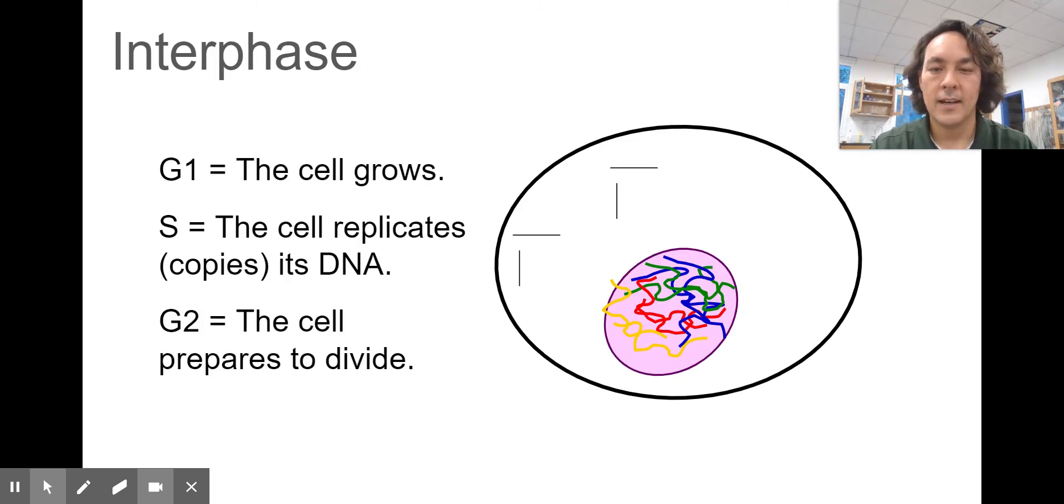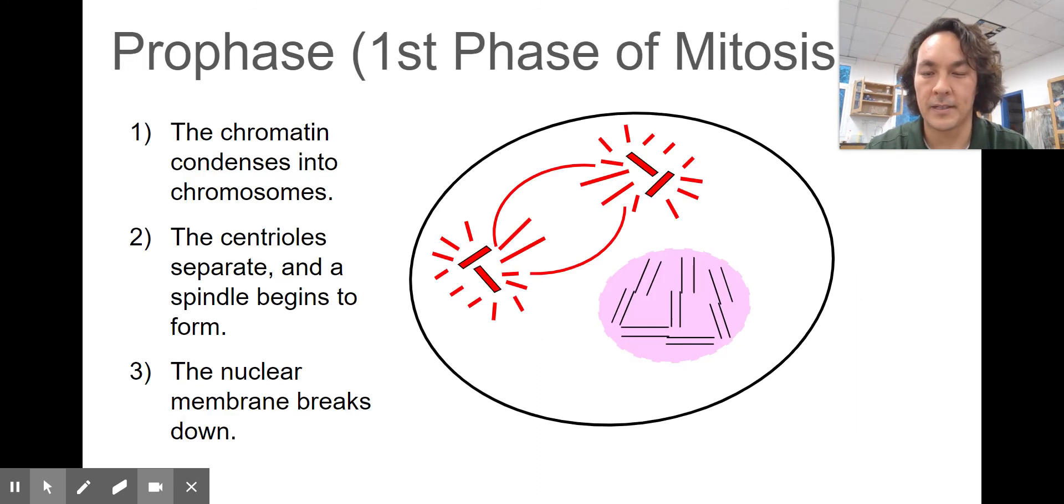Let's look at interphase. In G1, the cell is growing. It's doing the processes of being a cell and whatever it needs to accomplish. During the S phase, it's going to copy its DNA. It's a whole unit in and of itself of how DNA is copied. In G2, the cell is going to prepare to divide.